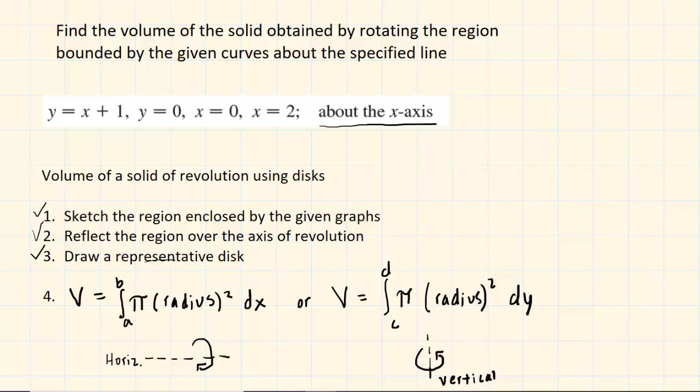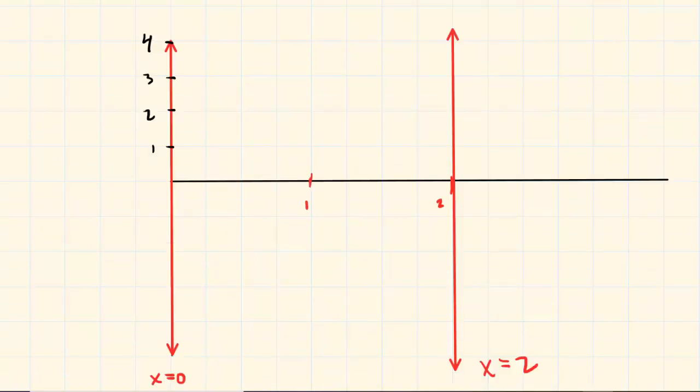So let's get to it by following step one, which is to sketch the region enclosed by the given graphs. We've gone ahead and graphed the two vertical lines, x equals 0 and x equals 2. Notice that we have expanded the scale along the x-axis so that this mark right here is 1 and then this mark over here is 2. As for the third graph, which was y is equal to x plus 1, that is just a straight line, and we can see that the y-intercept of that line is located at positive 1.